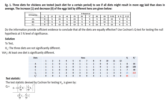The test statistic devised by Cochran for testing is given by Q. This formula uses K minus 1. I substitute: K is 3, so K minus 1 is 2. The summation of ri² is 213, ri squared total is 25², K is 3, summation of column totals Cj is 25, and Cj² is 65. Our Q-value is 2.8.